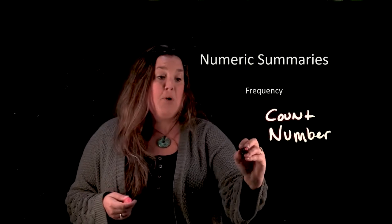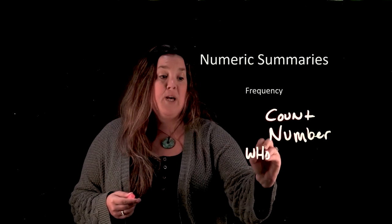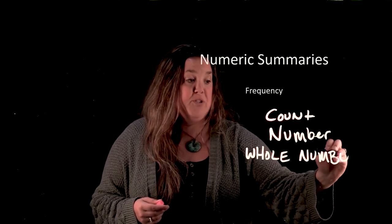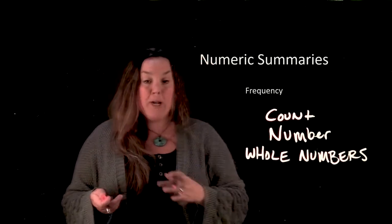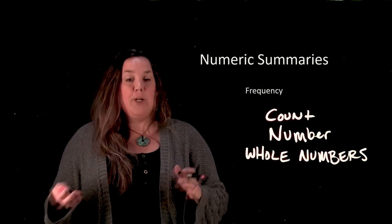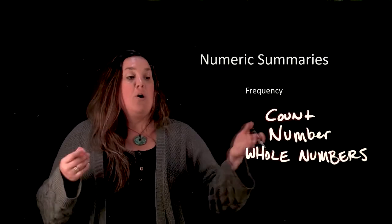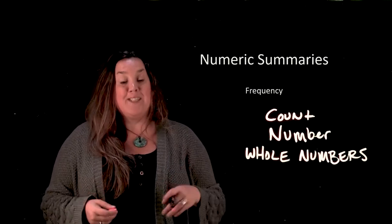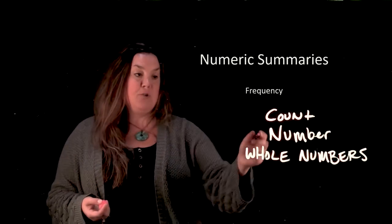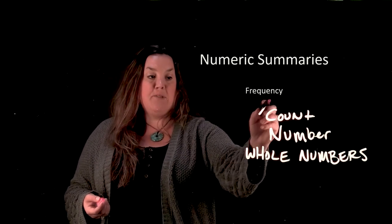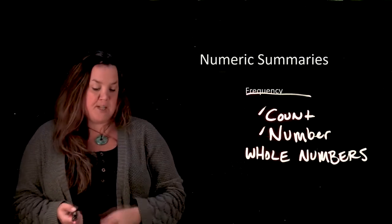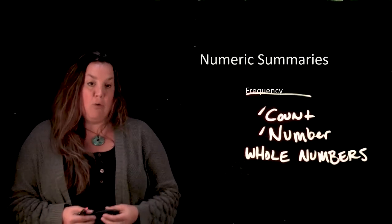The thing to remember, because you are counting, these have to be represented as whole numbers. If you're counting how many countries are in different regions, you would never have half a country in one region and half in another. They're going to be whole numbers, the count or frequency of how often you see individuals in each region. Count and number are synonyms for frequency, and that's our first numeric summary for categorical data.